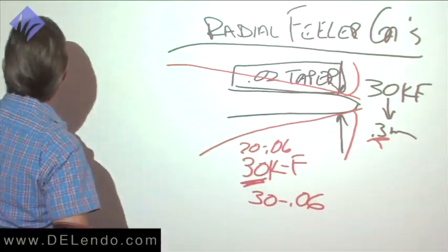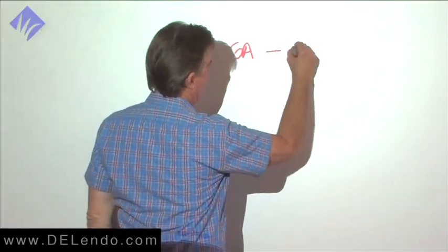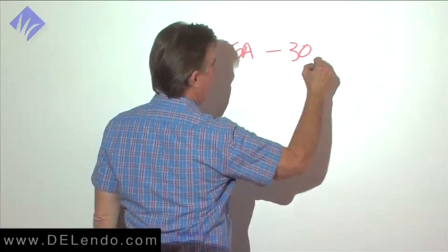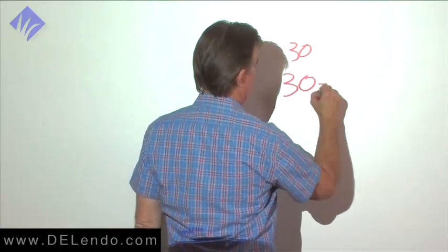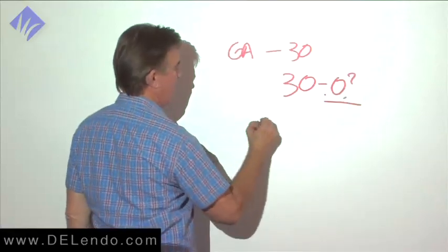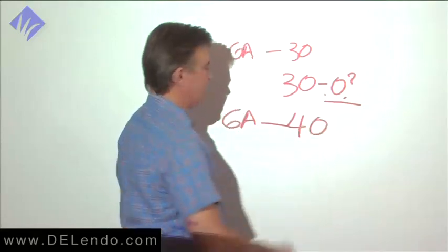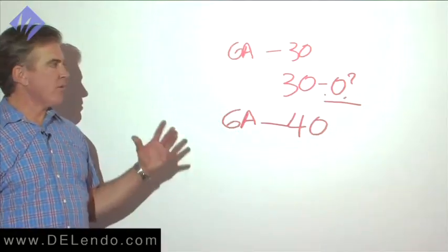On occasion, you will have the experience of gauging and having a 30 bind at length. You cut a 30.06 or whatever, and now you gauge again, and a 40 goes to length. That's not the way it's supposed to work out.